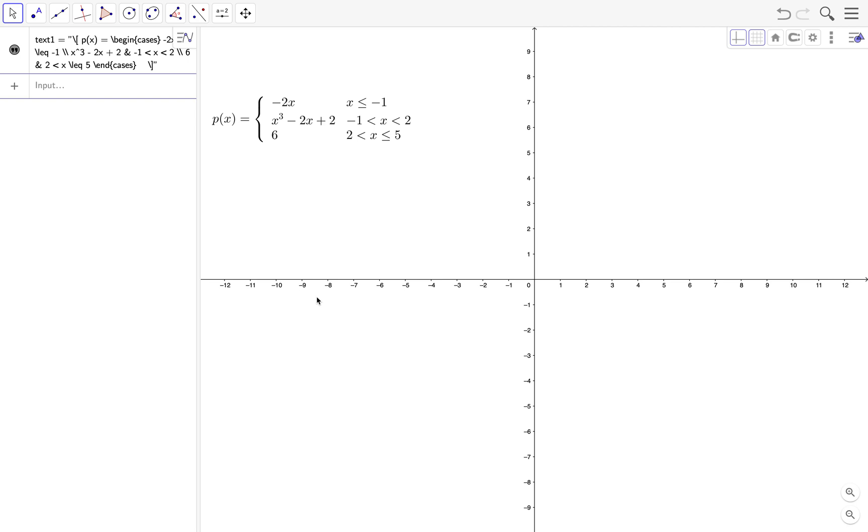So we will graph p of x equals negative 2x when x is less than or equal to negative 1, x cubed minus 2x plus 2 when x is between negative 1 and 2 excluding both ends, and 6 when x is between 2 and 5 excluding 2 and including 5.